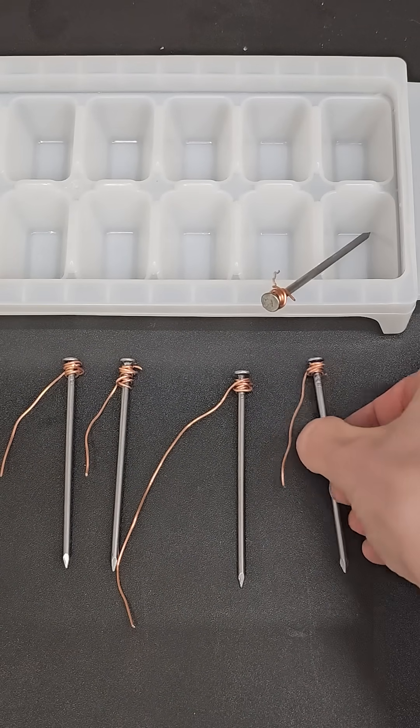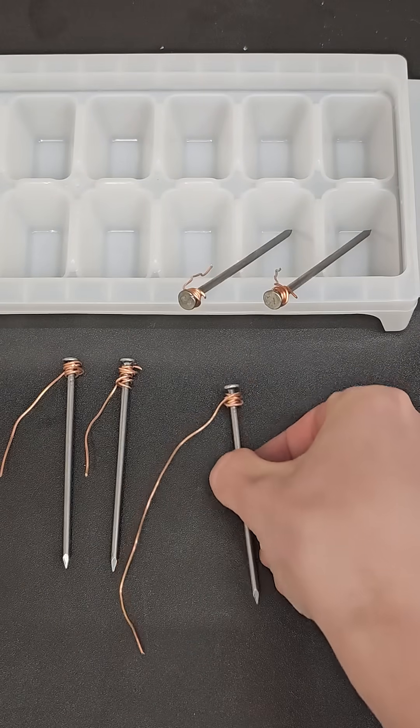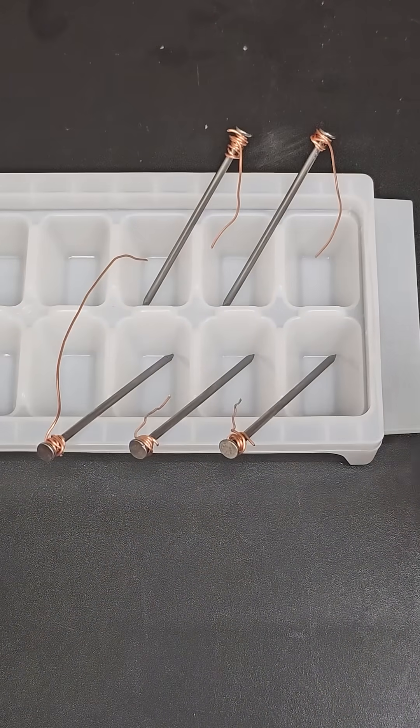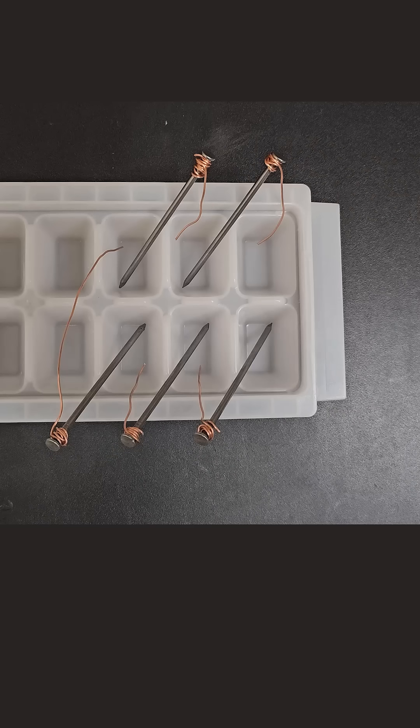Next, carefully place each nail in its own spot of an ice cube tray, making sure that the copper wire reaches into an adjacent spot without touching the next nail, just as you can see here in this top down view. Notice that there should be a gap where two spots of the ice cube tray aren't connected.